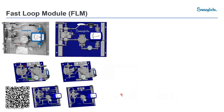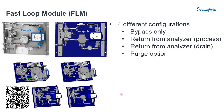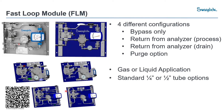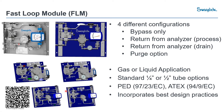Today we'll be talking about the fast loop modules that Swagelok offers. Swagelok offers four different configurations: bypass only, return from analyzer, drain, and a purge option. As you can see in the CAD drawings, they come in multiple configurations for either gas or liquid. The standard tube sizes are quarter inch or half inch, with metric equivalents available. They are PED and ATEX certified and incorporate best design practices.